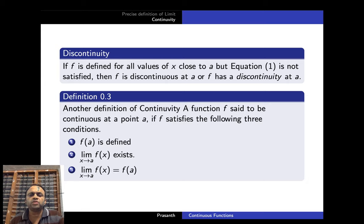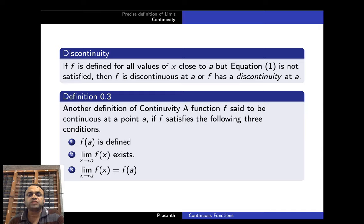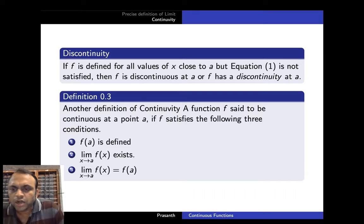For practical purposes, we define another functional definition of continuity. A function f is said to be continuous at a point a if f satisfies the following three conditions: (1) f(a) is defined; (2) limit x→a f(x) exists; (3) limit x→a f(x) = f(a). If all three conditions are satisfied by f at the point a, then we say that f is continuous at a.